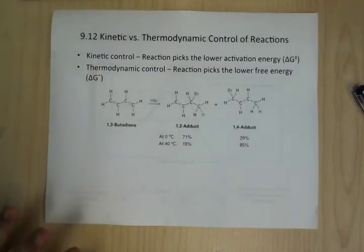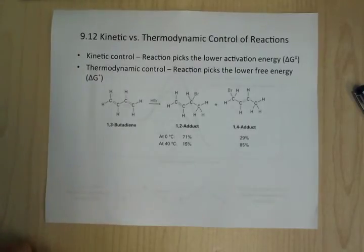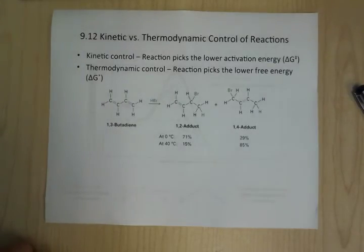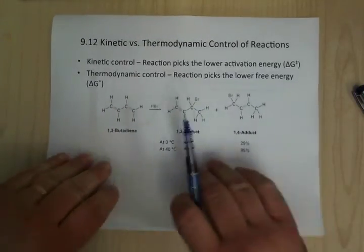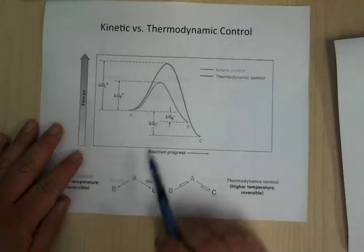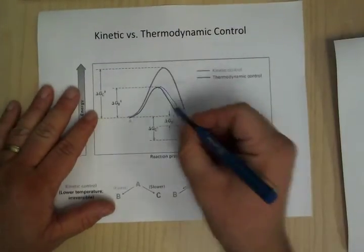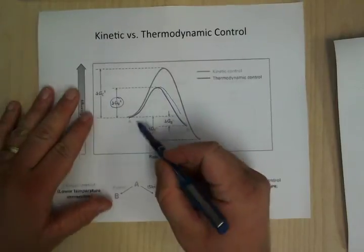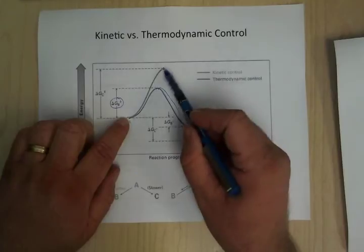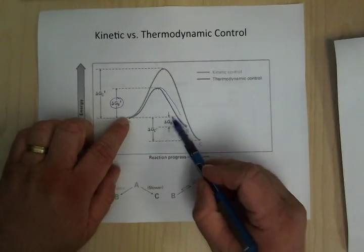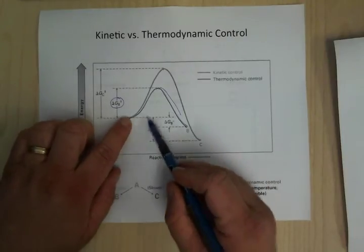Kinetic versus thermodynamic control: kinetic control is when the reaction picks the lower activation energy pathway when it has two routes to choose from. Thermodynamic control is when it picks the pathway leading to the lowest free energy product. On an energy diagram, one pathway has a lower activation energy but ends up at a higher product energy, while the other has a higher activation barrier but ends up at a much lower free energy product.